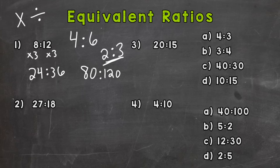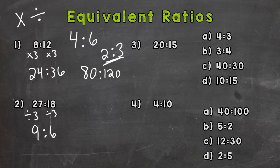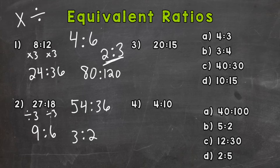Let's take a look at number 2: 27 to 18. Let's use division first — can you think of a common factor between 27 and 18? Hopefully you're thinking 3 or 9. Dividing both by 3 gives us 9 to 6, which is equivalent. Or you can divide both by 9 and get 3 to 2. For multiplication, let's multiply both by 2 and we get 54 to 36.